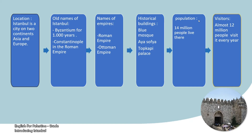Number three: names of empires. In the text you have the names of two empires: the Roman Empire and the Ottoman Empire. Now, the historical buildings in Istanbul — we have many gorgeous buildings like the Blue Mosque, Hagia Sophia, Topkapi Palace, and many more.